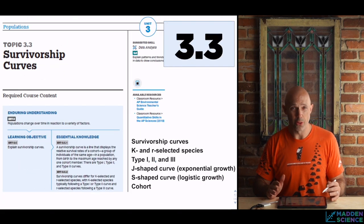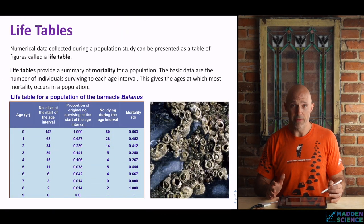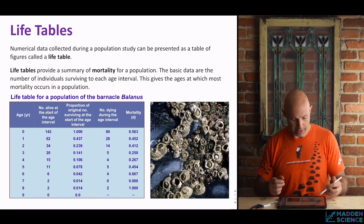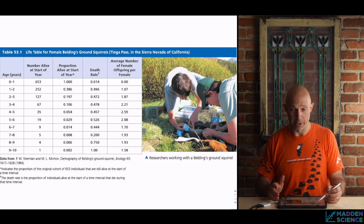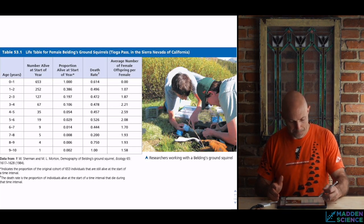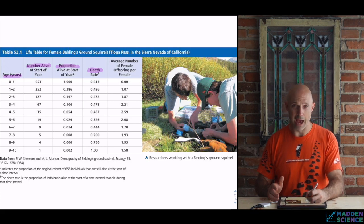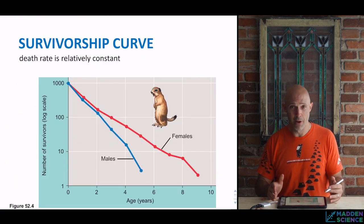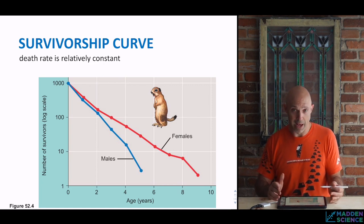Section 3.3 is on survivorship curves. We spent time on this in class — they start with life tables, going back to: how many are there, and what are the rates of birth and death? The data shown here is for barnacles; probably the most common textbook example is Belding's ground squirrels, with columns for age, number alive at the start of the year, proportions, death rates, and average number of offspring. If you graph that you get a pretty linear survivorship curve for both males and females.